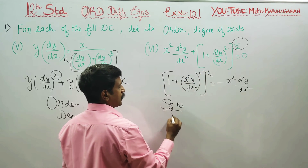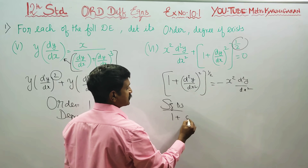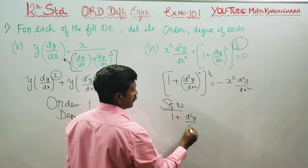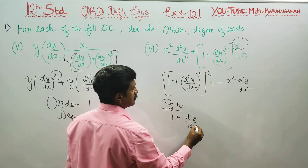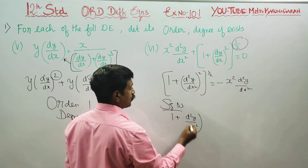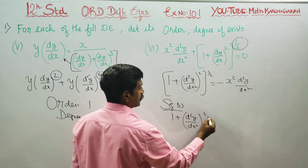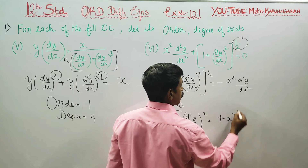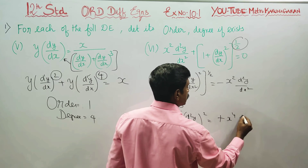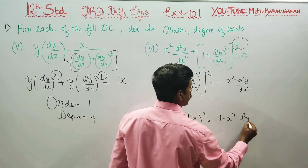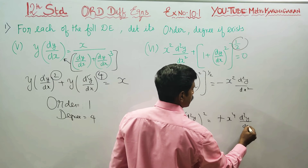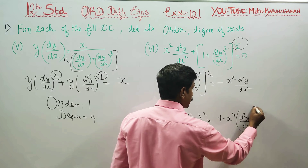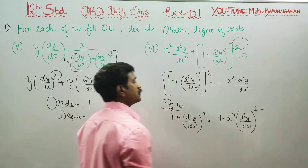You can see: 1 plus d²y/dx² whole square, and then 2 plus x power 4 times d²y/dx² whole square.